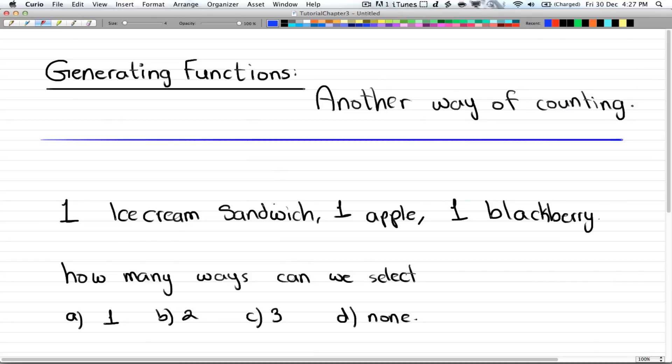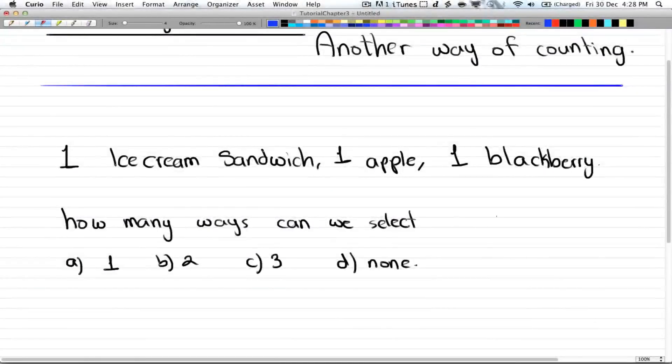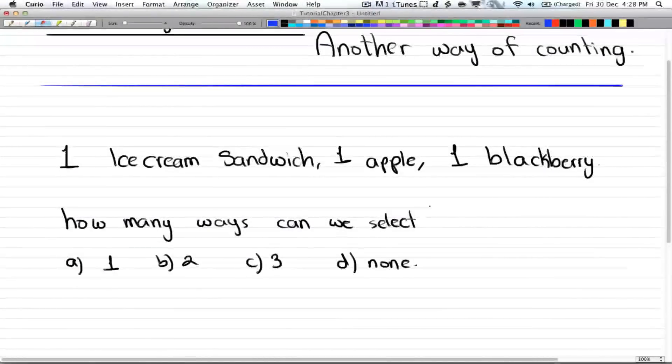So let's say we have one ice cream sandwich, one apple, and one blackberry. How many ways can we select one, two, three, or none?